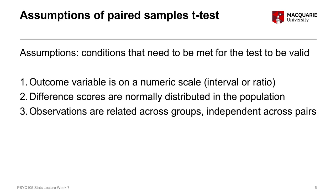The third assumption for our paired samples t-test is that the observations are related across the two different groups, but independent across the pairs. What this means is that for each pair — say, a person's pre and post scores — those two scores are from the same person, but each person is a separate, independent individual. So we have a relationship within the two time points, but independence across the people for each of those time points.